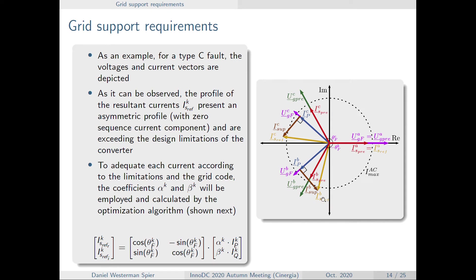In addition, if we take a look at this red one, the IS pre, and the reference for C and B, it has a very asymmetric behavior, which results in zero sequence.